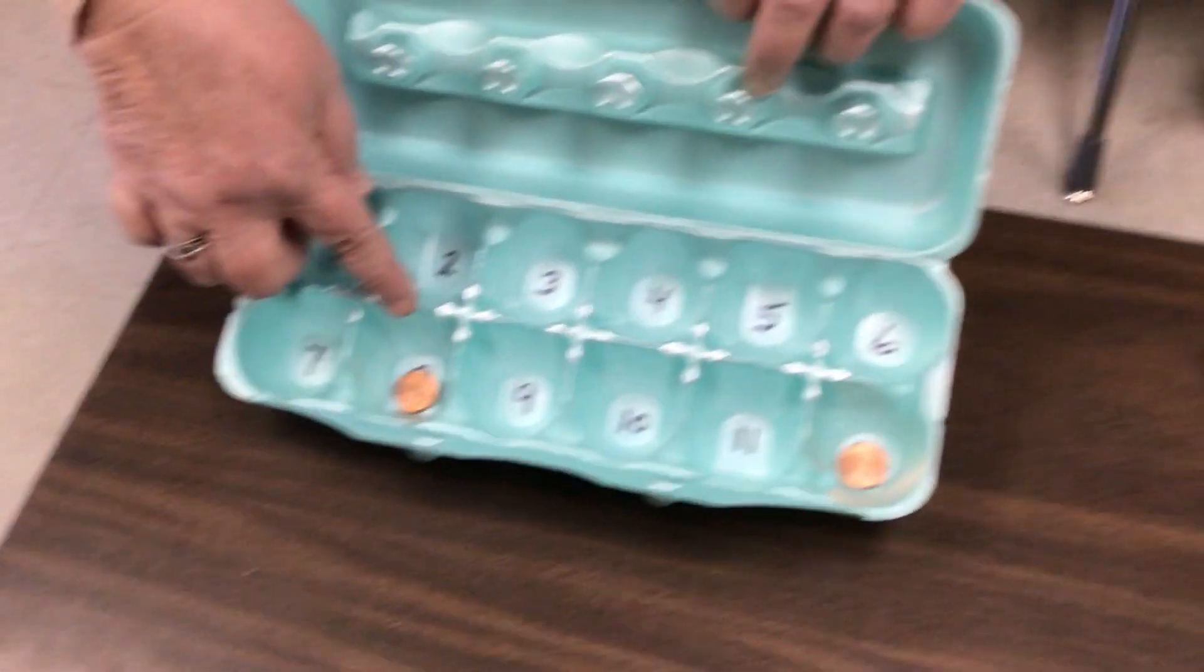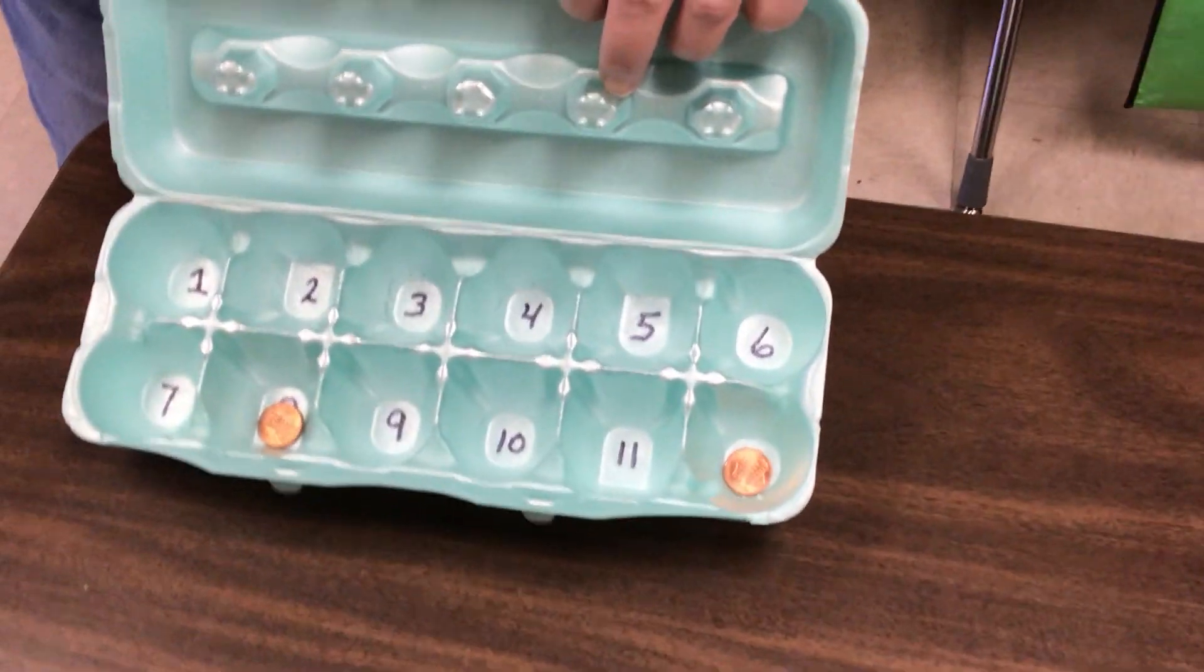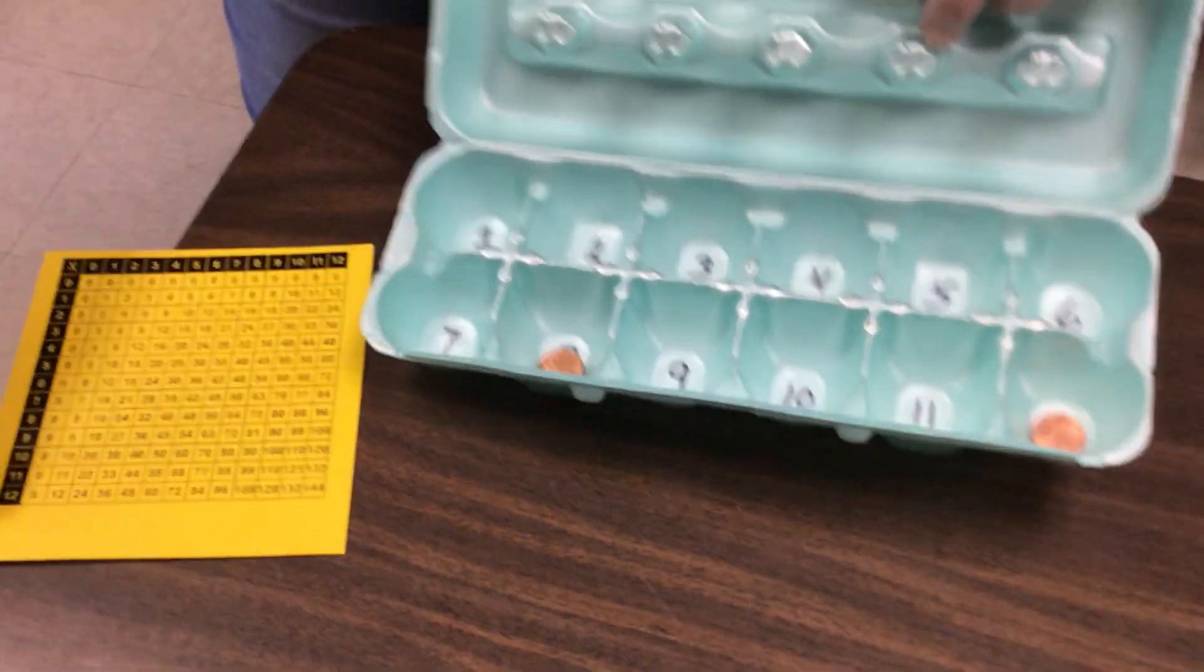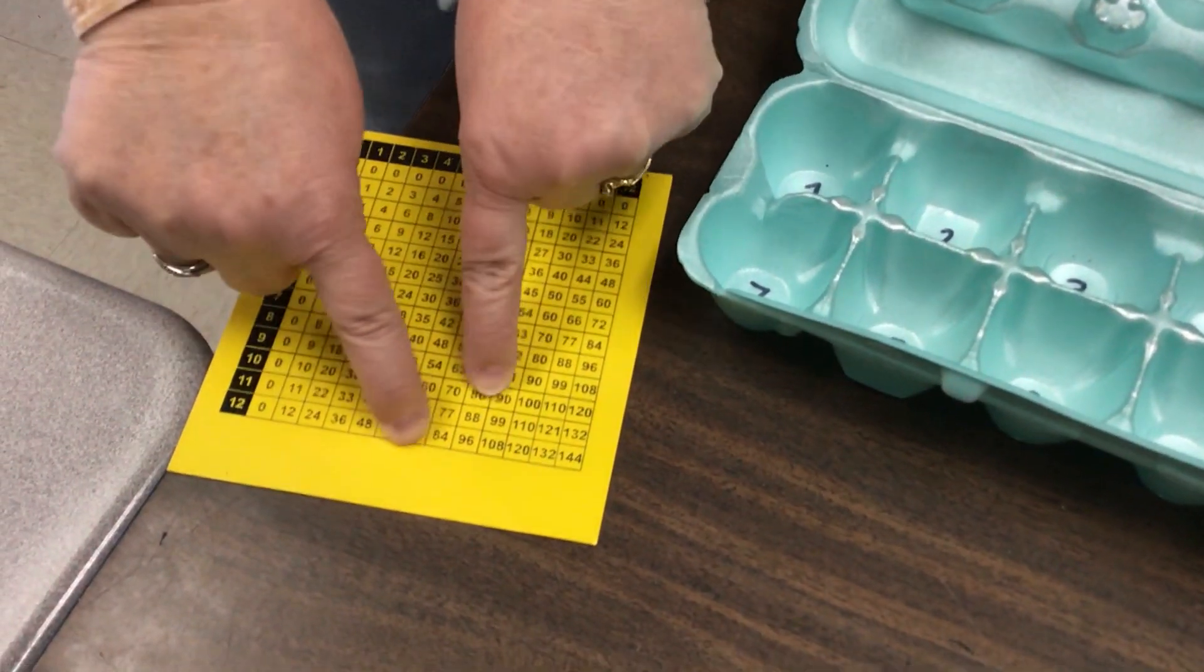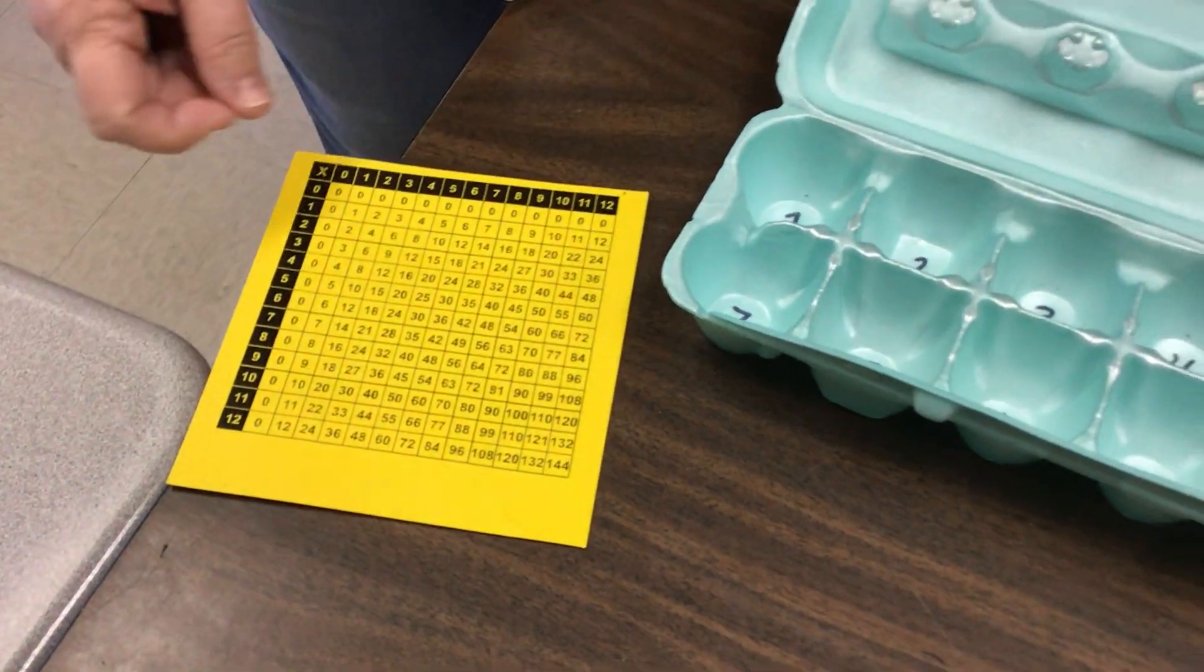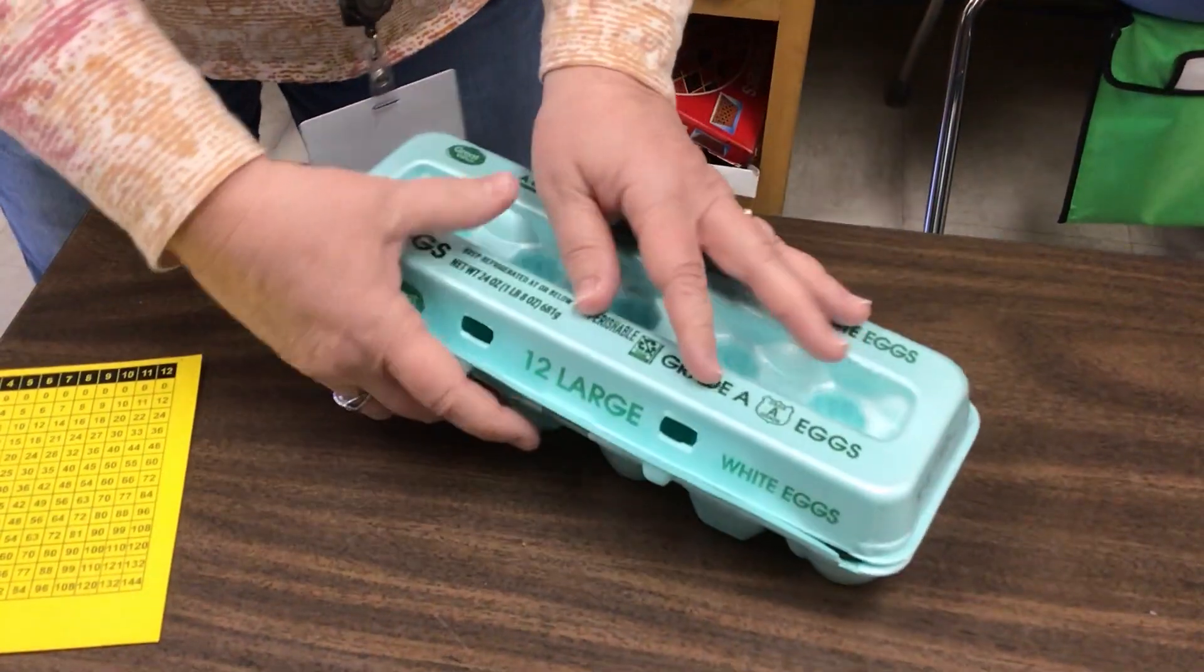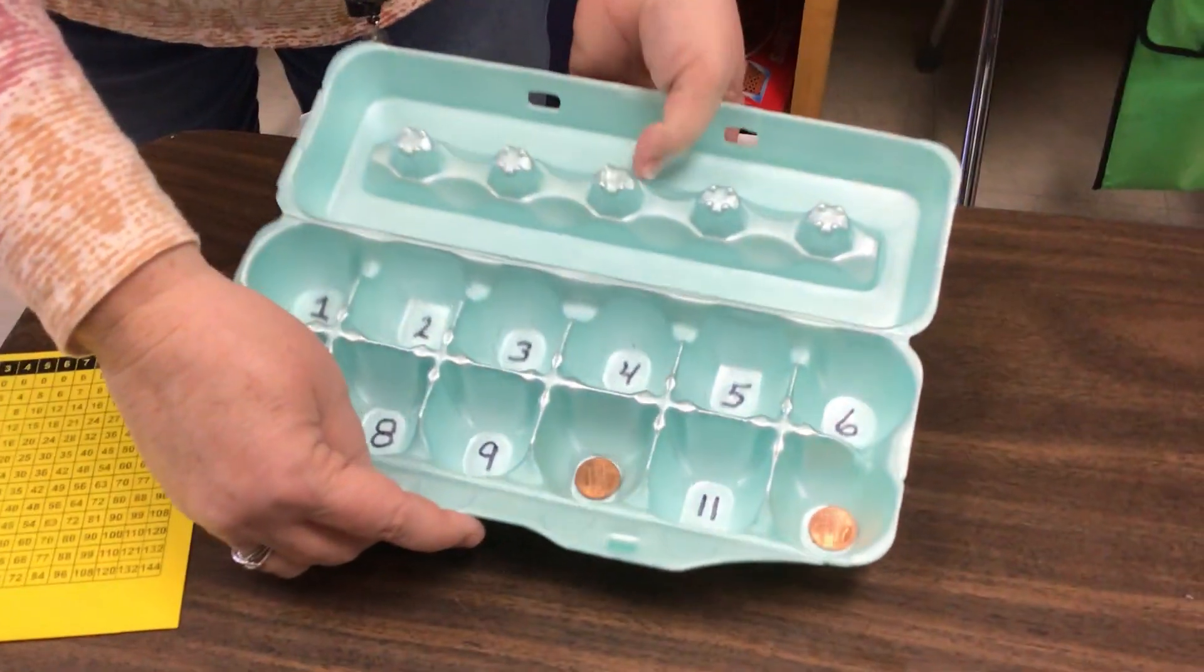When you open it, this one happens to be on eight and twelve. Eight times twelve, oh what would that answer be? I might have to use my multiplication chart if I have not used it. So I could find twelve and eight, follow my fingers. Eight times twelve would be ninety-six. Shake it up, let's see, oh it stayed the same this time, let's try it again.